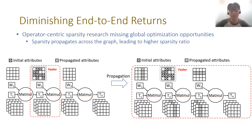Take the picture as an example. Some values of W2 are pruned by the compression algorithm at the beginning. If we just replace the current matmul operator with the sparse matmul, then only the second matrix multiplication can become faster. The right figure shows the propagated sparsity attribute affected by the initial sparsity attribute. After sparsity propagation, the sparsity ratio of the entire model becomes much higher, as nearby operators can also be faster due to the propagated sparsity. So ignoring the graph-level optimization will diminish the end-to-end returns.